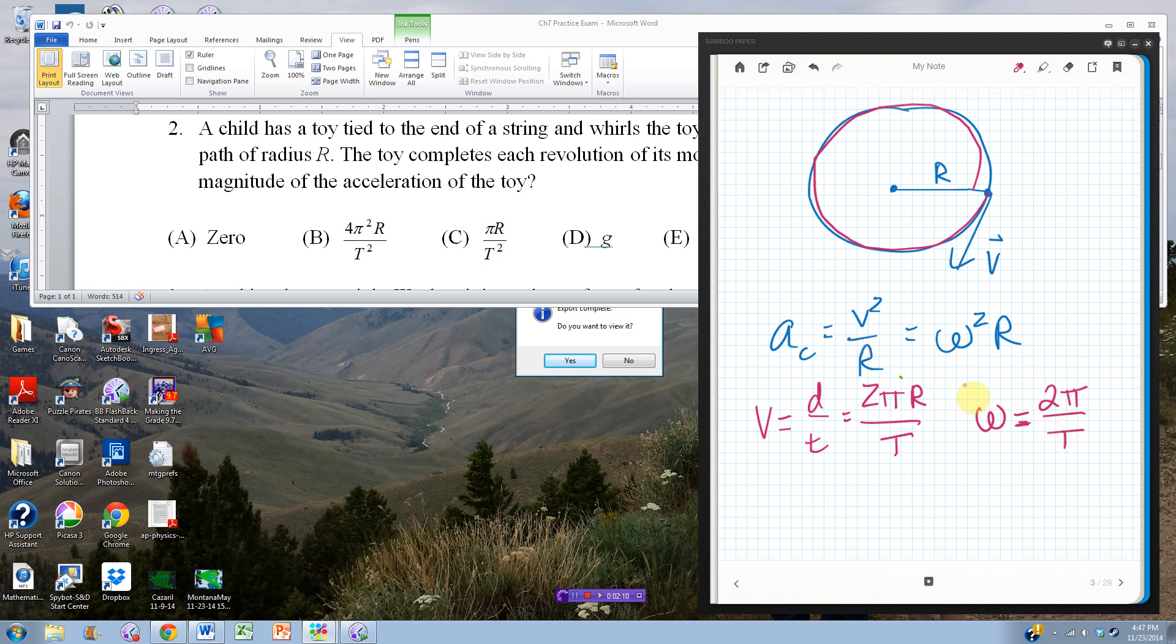Let's see what happens when I put either one of those into this equation up here. So if I put it in this side, I get that ac is, so this gotta be squared, be 4 pi squared r squared, 4 pi squared r squared over t squared, and then I still had that r on the bottom. And one of those r's would go away, and I'd get this, 4 pi squared r over t squared.